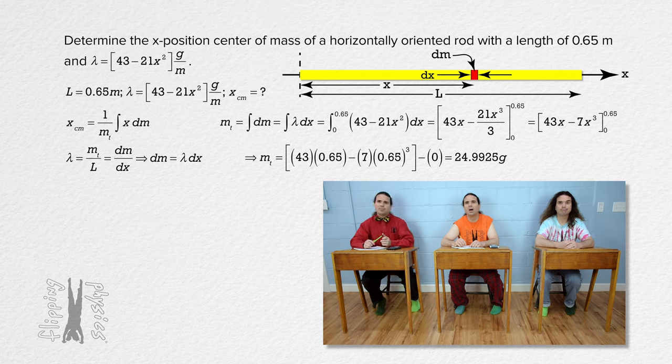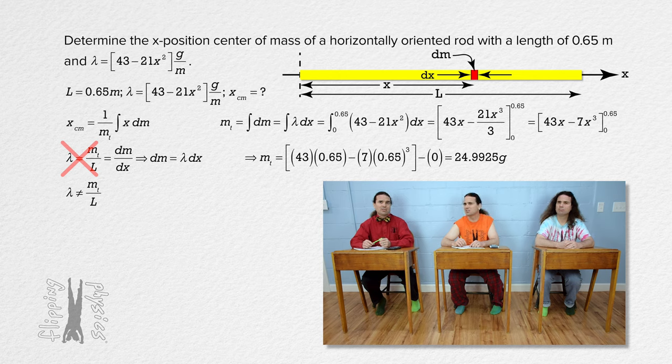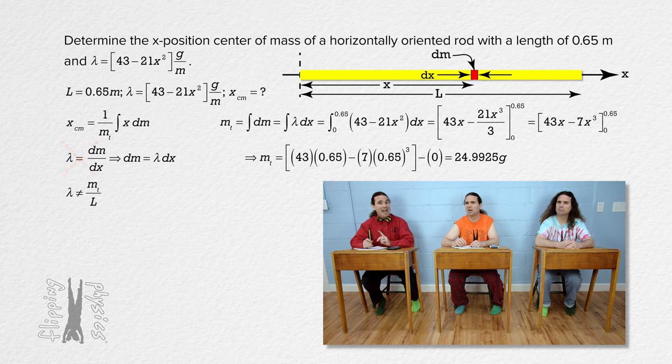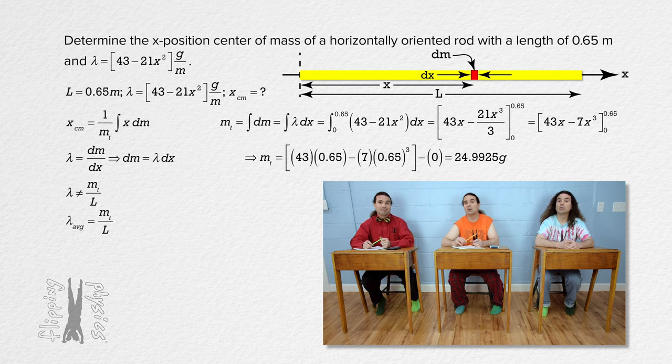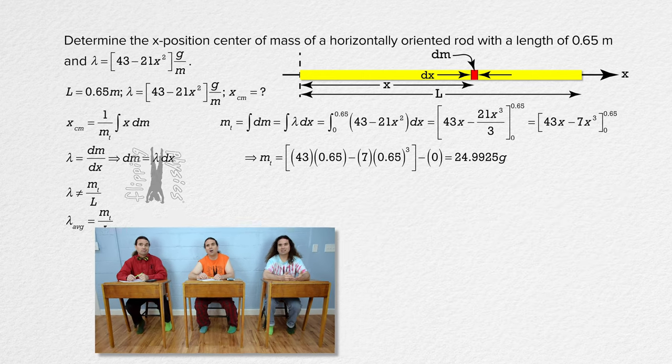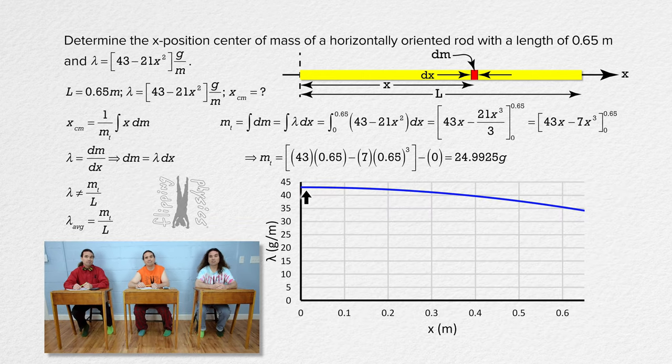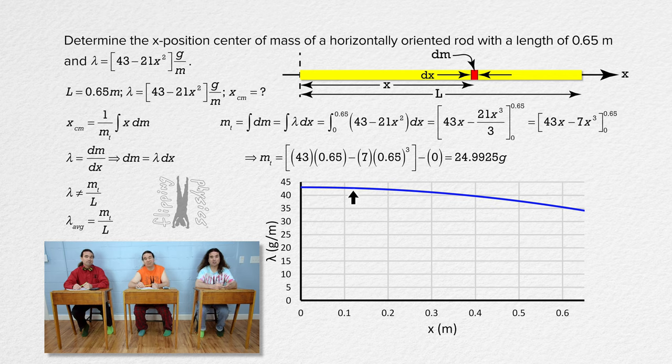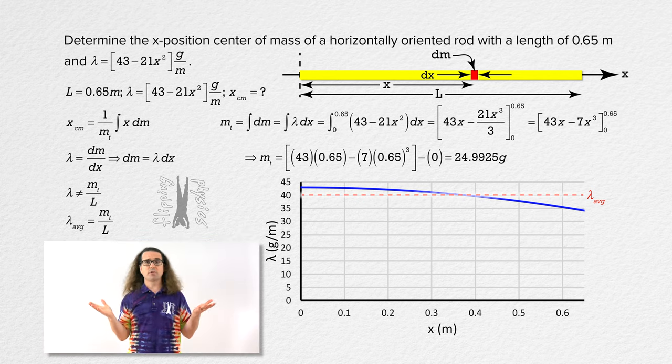Wait a second. The linear mass density of the rod does not equal total mass of the rod divided by length of the rod. It doesn't? No. The average linear mass density equals the total mass divided by the rod length. Right. The linear mass density changes as a function of position, so it cannot equal the total mass over length because that would be just a single number and not change as a function of position. Exactly. Oops. Thank you, everybody.